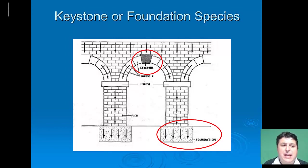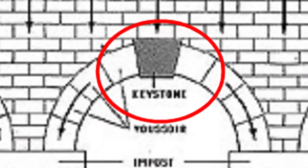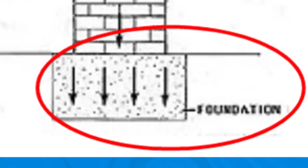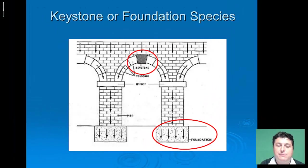Another set of roles that organisms can play is as keystone or foundation species — terms taken from architecture. A keystone is a special stone that's part of an arch; it's what holds the arch up, and if you take it away the whole arch falls apart. Keystone species are similarly fundamental in maintaining the structure of an ecosystem. Foundation species are what everything is built upon — they establish a baseline and help alter ecosystems so that other organisms can build their lives on the environment produced by that foundational species.